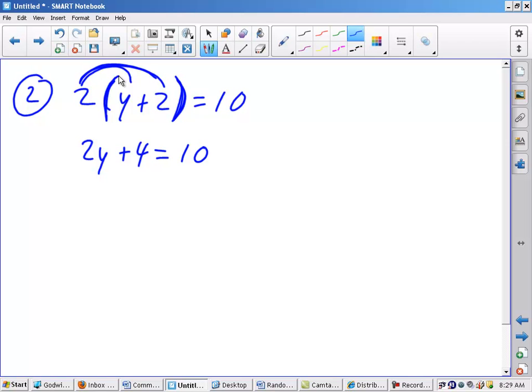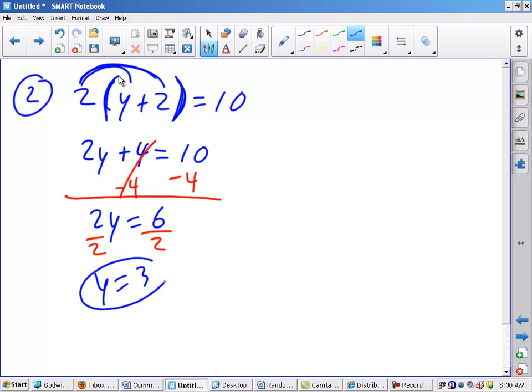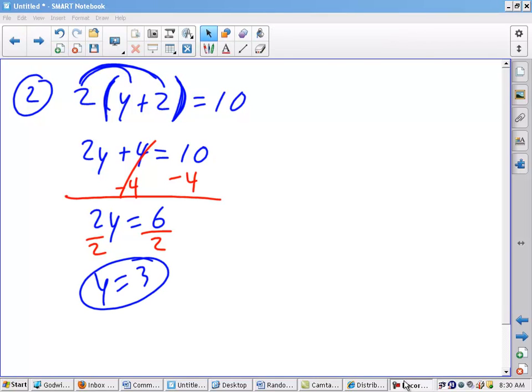I then go to my next step, which is combine like terms on each side, and I see no like terms that need to be combined before I can do anything else. So I simply have a two-step equation. Do your addition-subtraction step first. Do the opposite operation, and you get 2y equals 6. And then divide by 2 because it's the opposite operation to give me y equals 3.